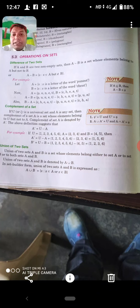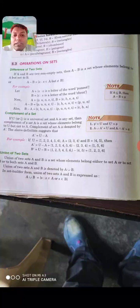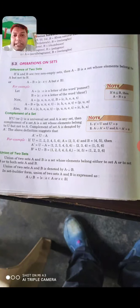These elements are called A minus B or difference of two sets. For example, A is X such that X is a letter of the word Puneet. B is X such that X is a letter of word Cheat. Here A is equal to P, U, N, E, T. Repeated words ko nahi liktayin. Don't write the repeated words.